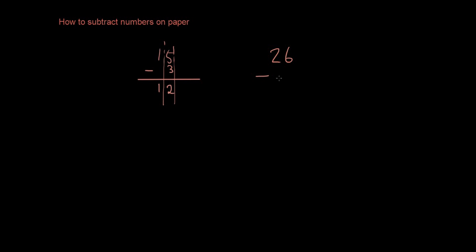Let's do another one, 26 minus 14. Let's look at the first column. 6 minus 4 is 2, 2 minus 1 is 1, so the answer is 12. 26 minus 14 is 12.